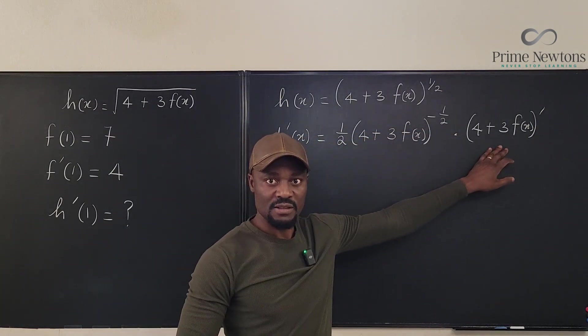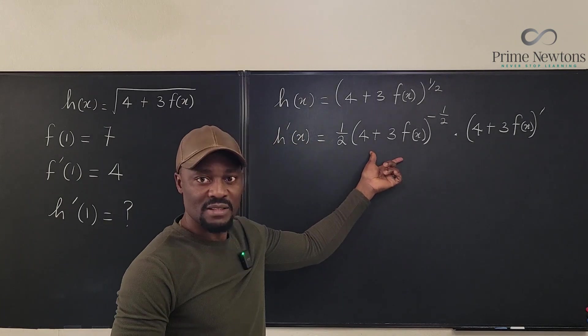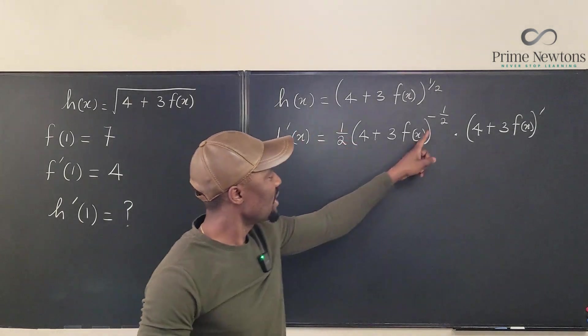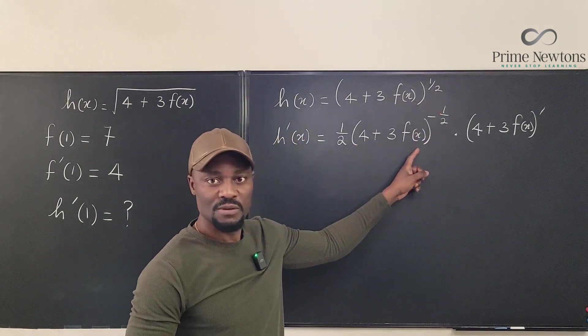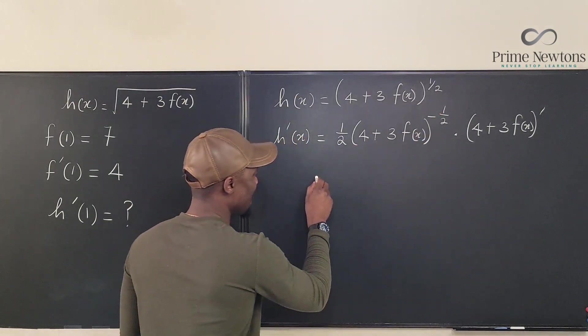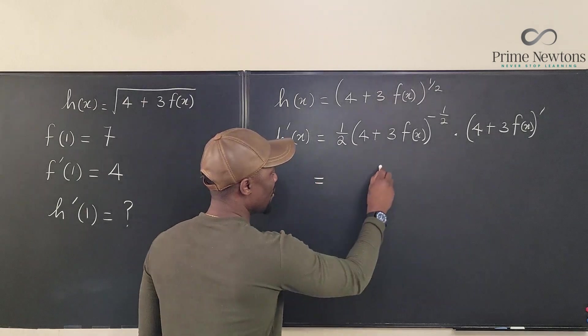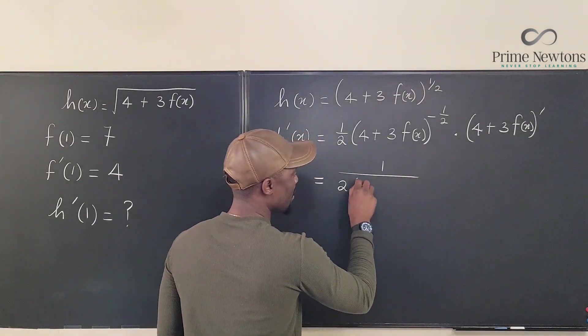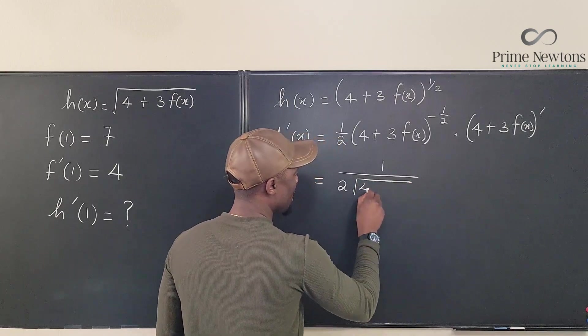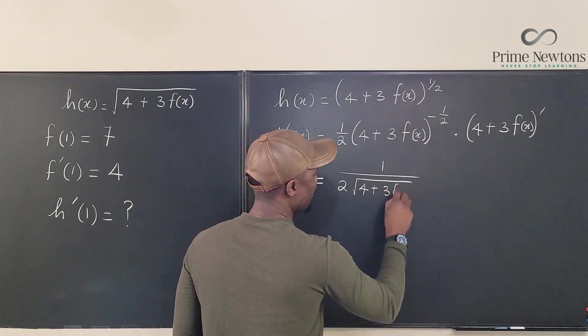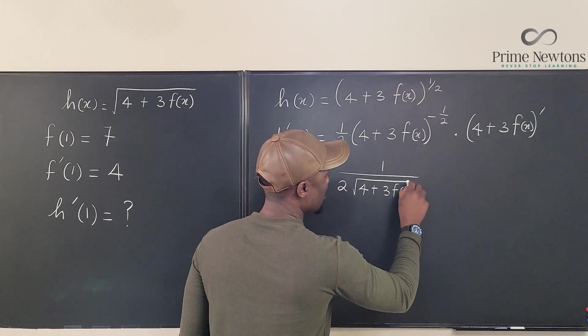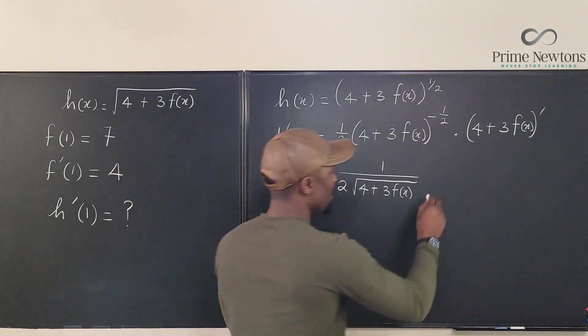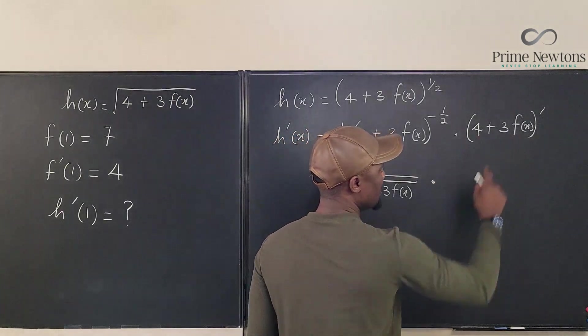So I need to differentiate this, but I want to rewrite this in a nicer way. So this is 1/2 times this is 1 over the square root of this. So if we write this out nicely this should look like this: 1 over 2 times the square root of 4 plus 3f(x). This is what this should look like.